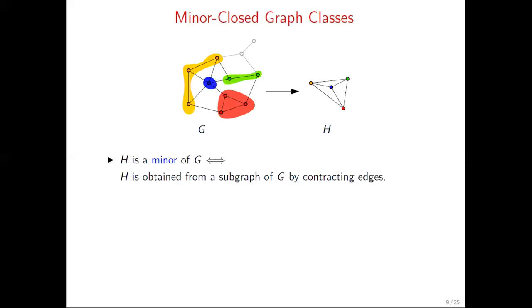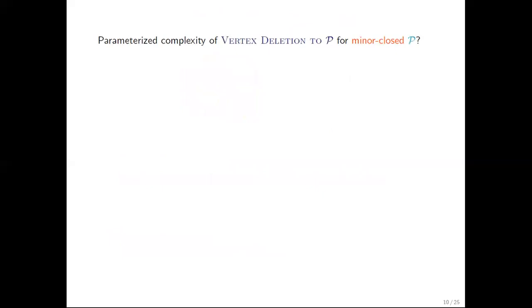But what about graph classes that are minor-closed? To define what a minor-closed graph class is, we first need to give the definition of a minor. A graph H, as shown on the right, is a minor of graph Z if it can be obtained from a subgraph of Z by contracting the edges in these colored bags in Z to single vertices, while translating the adjacencies between bags in Z to edges of H. Now, the graph class P is minor-closed if, for every graph in P, all its minors are also in P. So we focus our study on minor-closed graph classes.